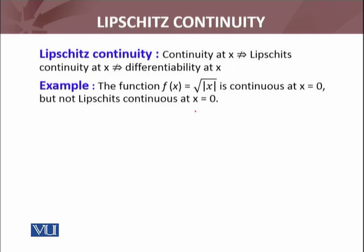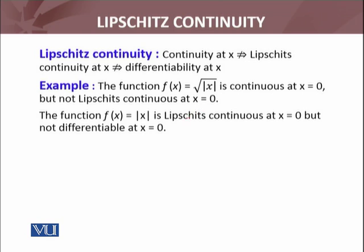Counter examples which you will check yourself: the function f(x) = √|x| is continuous at x = 0 but not Lipschitz continuous at x = 0. The function f(x) = |x| is Lipschitz continuous at x = 0 — we have discussed that this is not a differentiable function — but not differentiable at x = 0. So these two counter examples verify that these implications do not hold in the reverse direction.